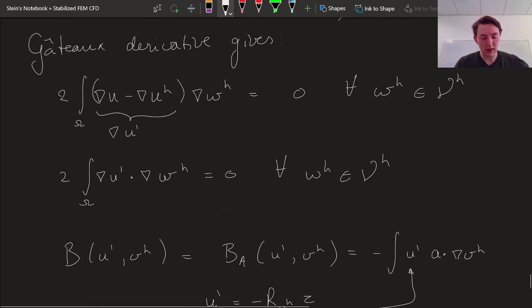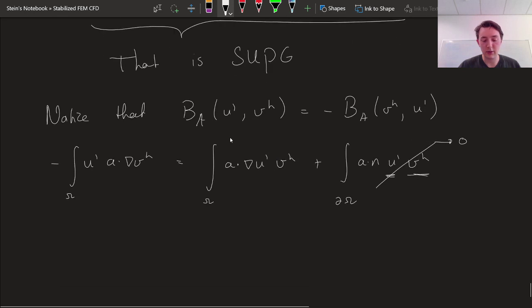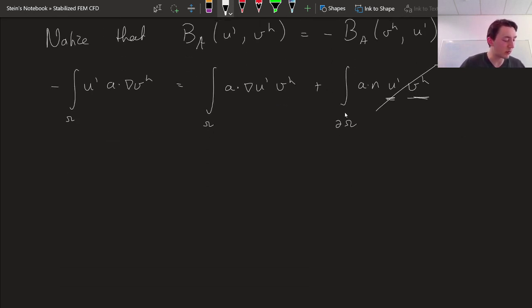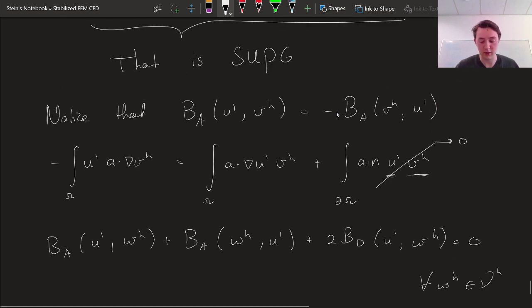So if from this Gato derivative we understand that 2 times the bilinear form of the diffusion term is going to be equal U' comma Vh is equal to zero. All right, that's what that's saying. And I know that these are equal opposite. Well, I could, if I wanted to, add this all together and say that also B A U' comma Vh plus B A W H comma U' plus 2 times the diffusive part is equal to zero for all W H in our core scale approximation space.